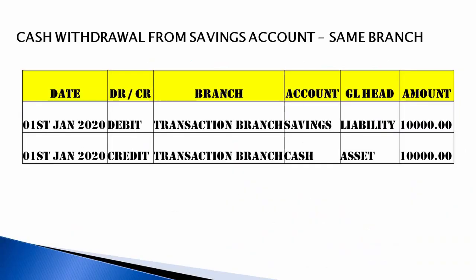The first transaction is cash withdrawal from a savings bank account at the same branch — the customer is doing a cash withdrawal transaction in his own branch. For example, he has opened an account in Banjara Hills and is performing the transaction at Banjara Hills only. For a cash withdrawal, the savings bank account will be debited with 10,000 rupees. The general ledger liability will be debited and cash (asset) will be credited.